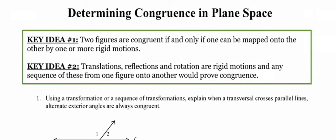The second key idea is also something you've seen before. Our translations, our reflections, our rotations are all rigid motions and any sequence of these that maps one figure onto the other is going to justify or prove congruency.